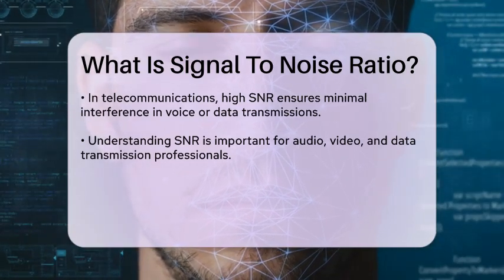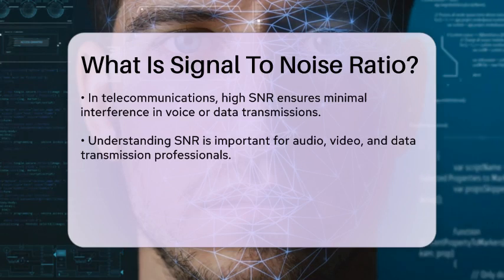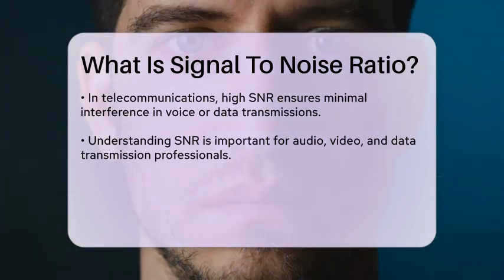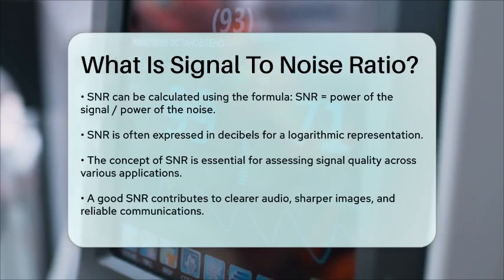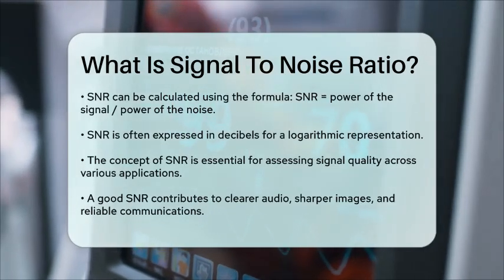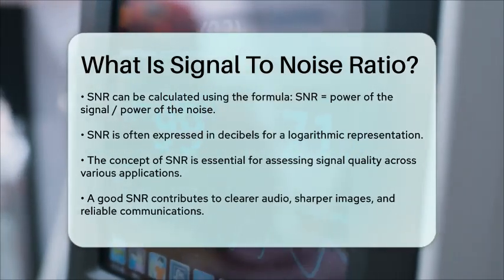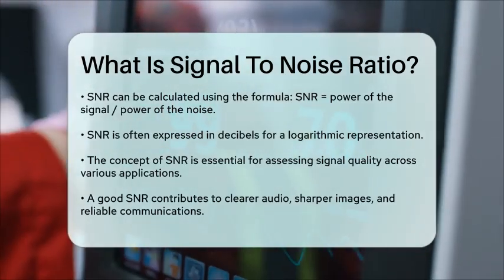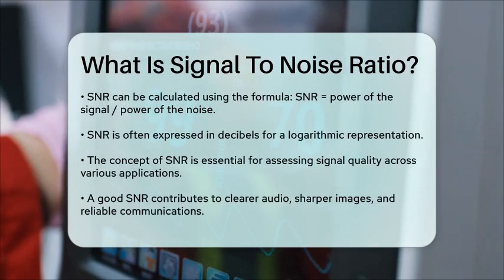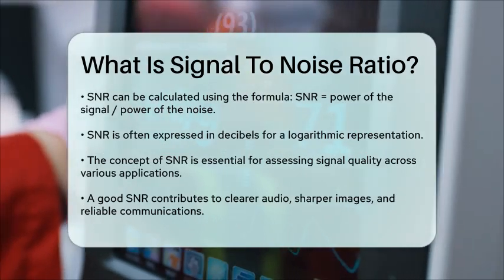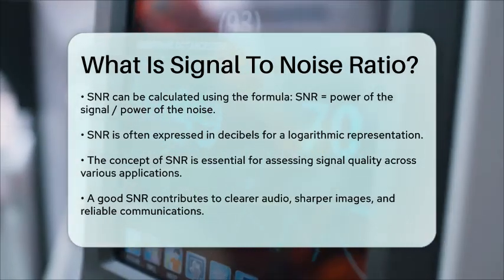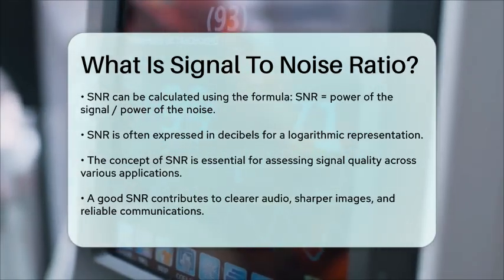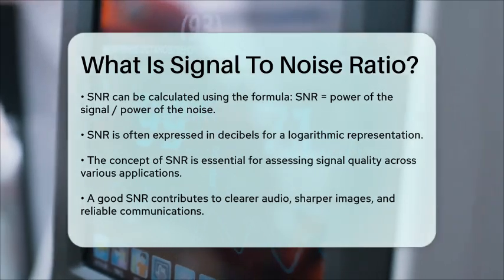To calculate the signal-to-noise ratio, one can use the formula: SNR equals the power of the signal divided by the power of the noise. This ratio is often expressed in decibels, which provides a logarithmic scale to represent the difference between the signal and noise levels.